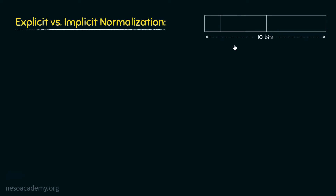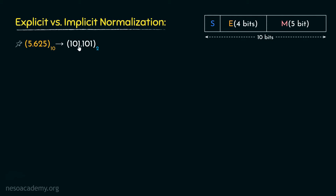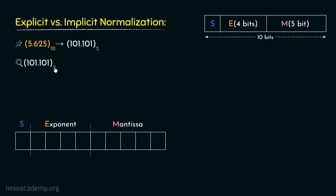Say we are given a 10-bit memory space where the MSB specifies the sign bit, the next 4 bits are for the exponent, and finally the last 5 bits are dedicated for the Mantissa. We are going to store the value 5.625 in binary — that is 101.101 — in this fixed-bit memory space in both explicit and implicit normalization forms. Let's start off with the explicit normalization form.